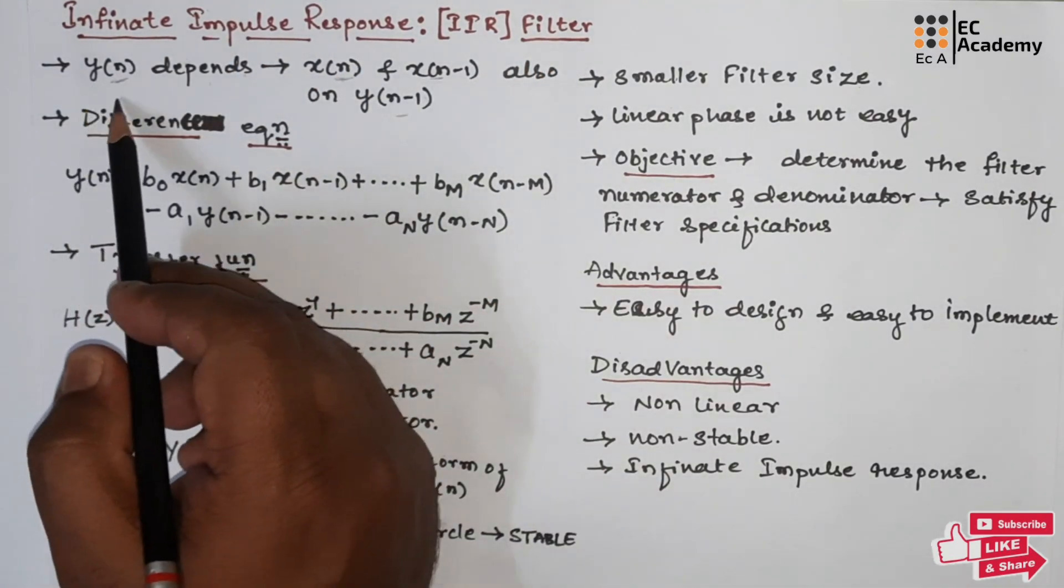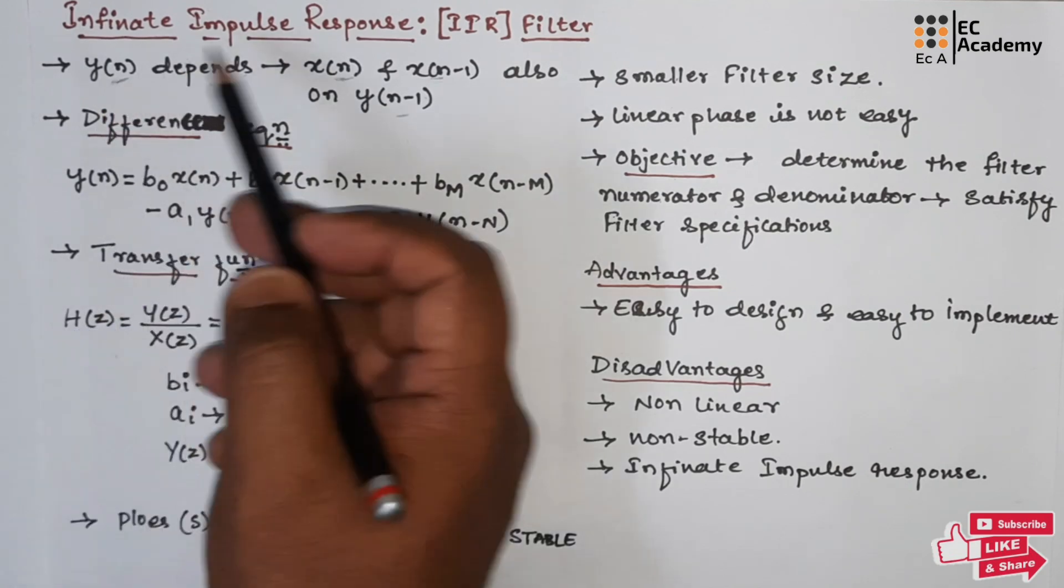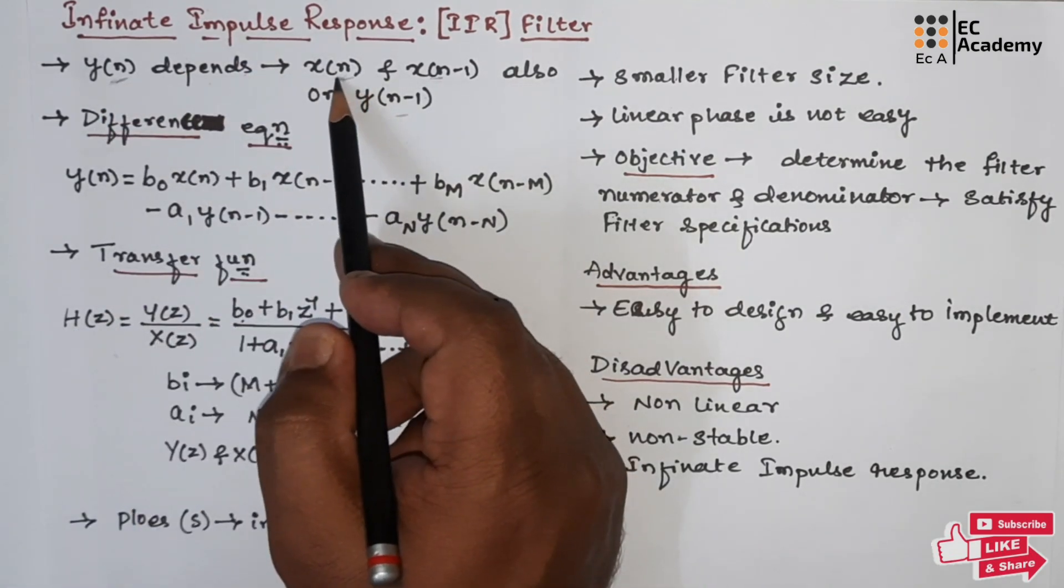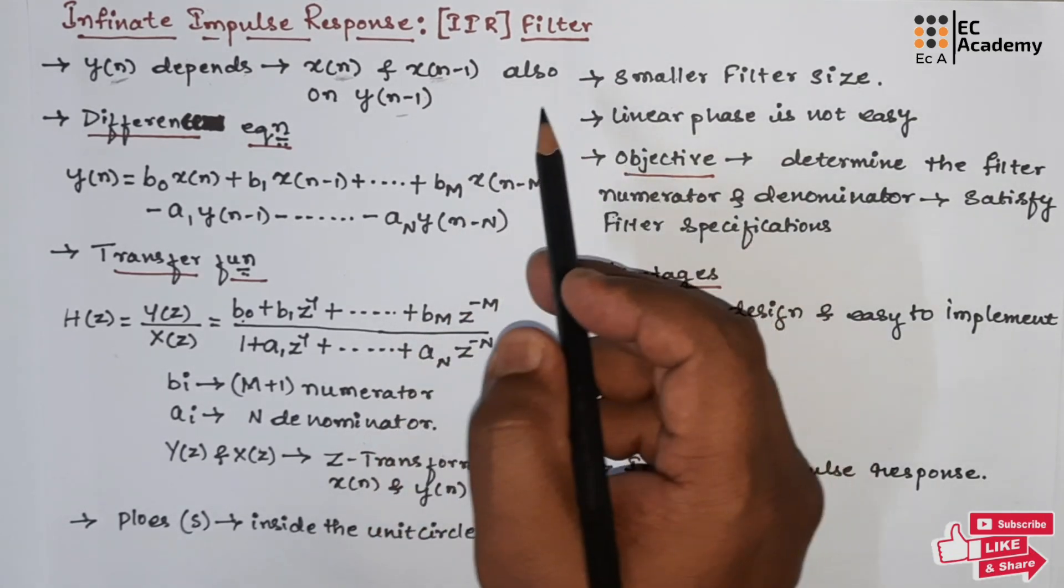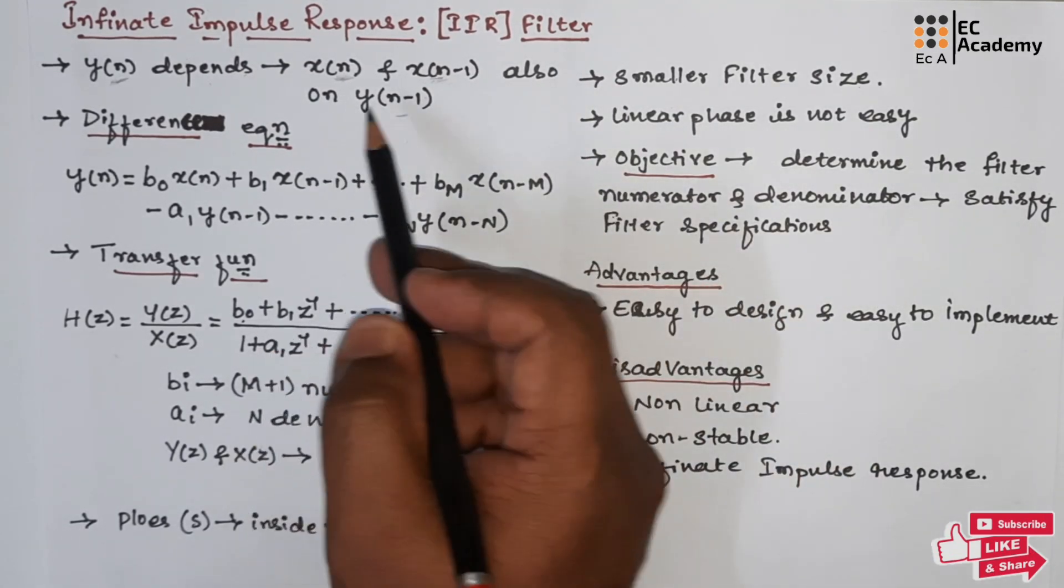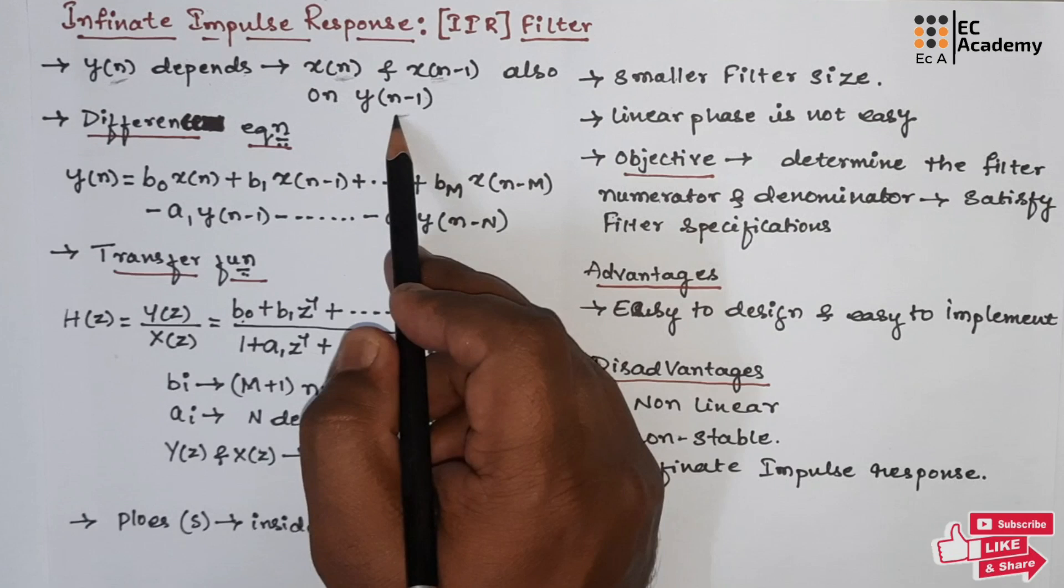Here the output of IIR filter y(n) will depend upon the present input x(n) as well as the previous input x(n-1), and also it will depend upon the past output y(n-1).